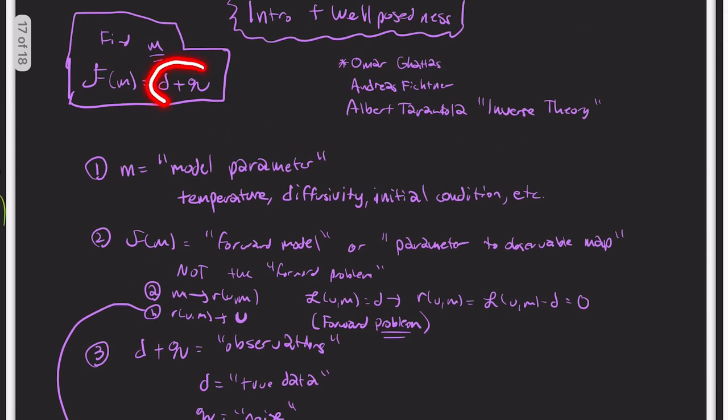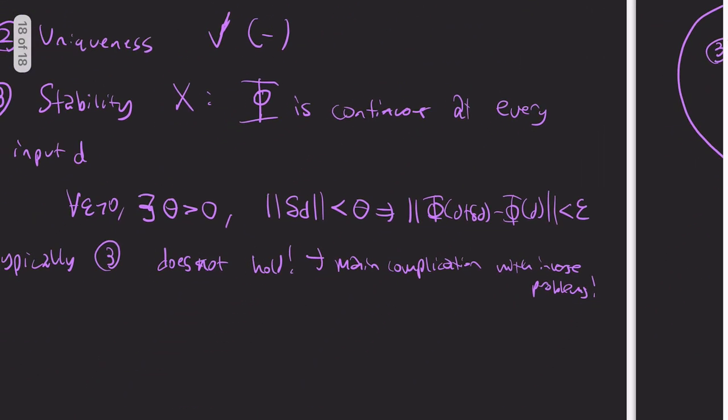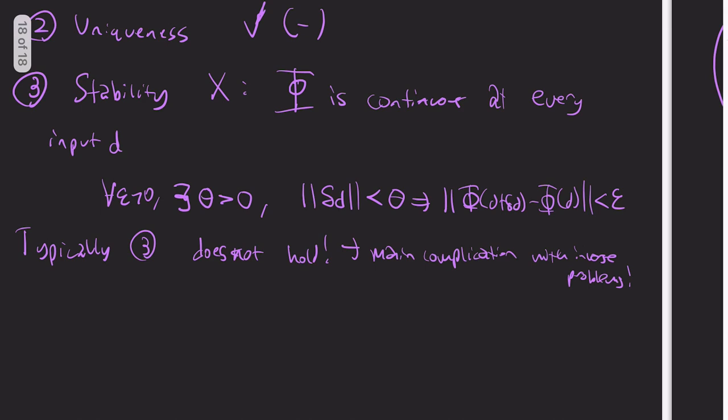So hopefully this gives you a general sense here. So yeah, so just one more thing I'd like to point out, these perturbations are unavoidable, because we don't have perfect observations.